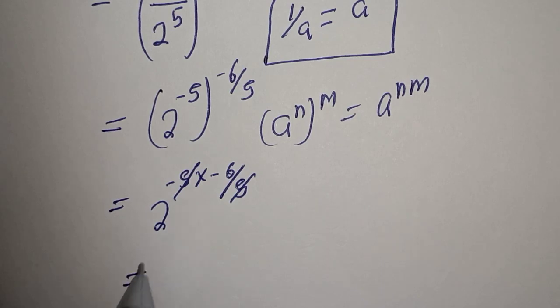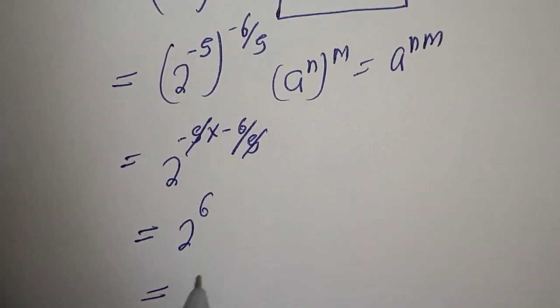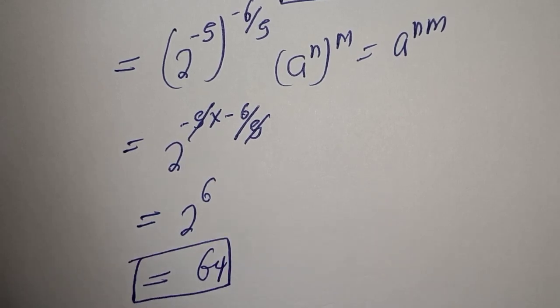Then this equals minus 5 times minus 6, which is plus 6. We have 2 raised to the power of 6, which equals 64. And this is the final answer.